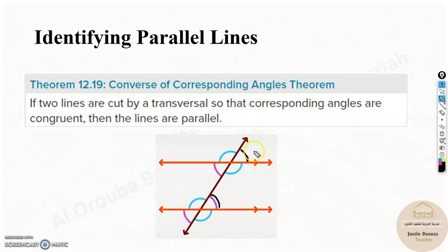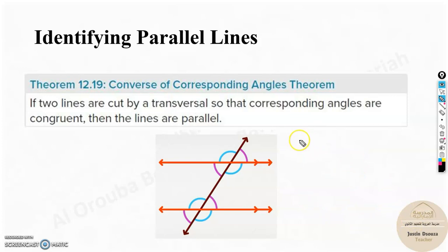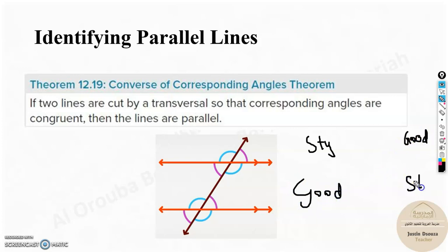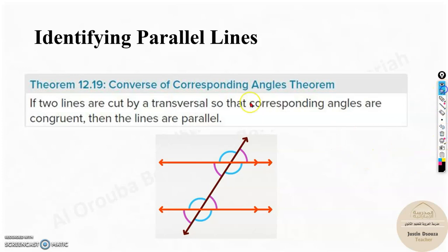Now we are saying: because they are congruent, they are parallel. It is like saying Hamad is studying well, so he will get good marks — or, Hamad is getting good marks because he is studying well. We can write it the other way around. Studying well leads to good marks; and because he is getting good marks, we can say he is studying well. That is the converse. I hope this makes sense.